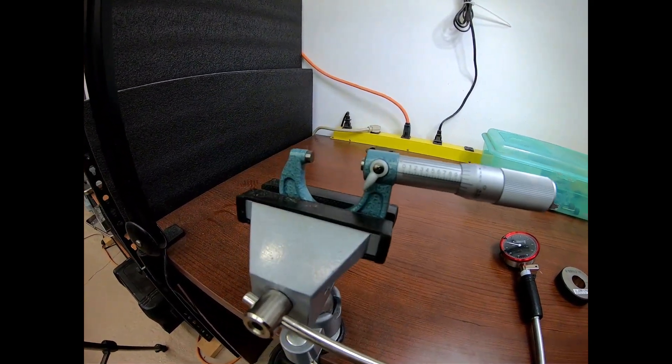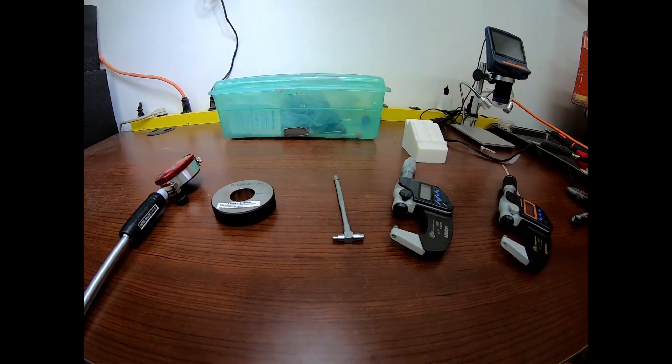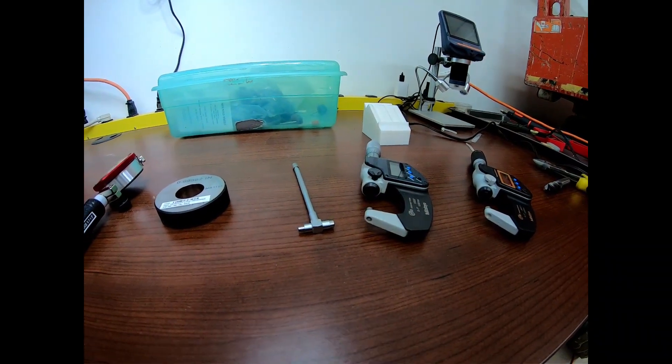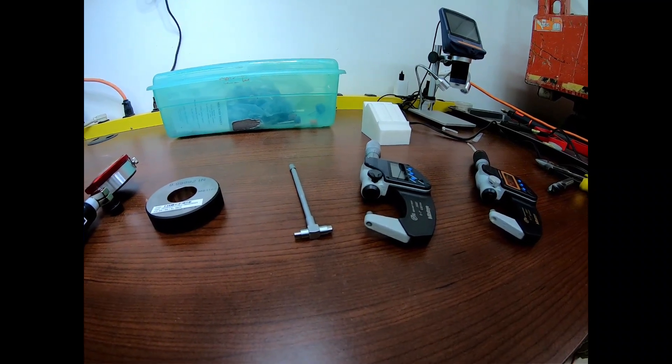It's set at perfect zero here, against the gauge block, been verified. Checked with the snap gauges, snap gauge to the micrometer, snap gauge to the gauge ring, always reading two tenths over.